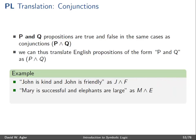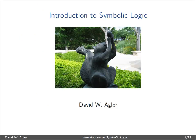'Mary is successful and elephants are large' can be translated into M wedge E, and 'Frank killed the man and was found guilty' as K wedge G, where K stands for 'Frank killed the man' and G stands for 'was found guilty,' and the wedge expresses the truth function also expressed by AND.